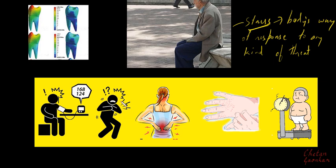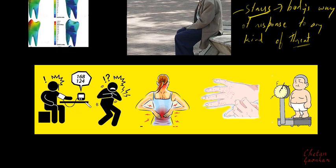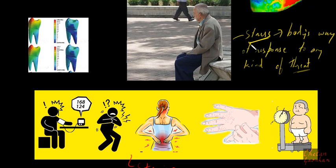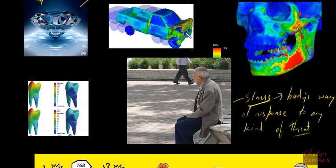There is one more response to an external threat which can be visualized by others. For example, if this man is under stress, he might face hypertension, heart problems, back pain, skin rashes, or weight gain. These visible responses to the threat can be put together and called strain. So stress is the body's response to any kind of threat, and strain is also a response — but strain is something which can be visualized by others, whereas stress can only be experienced.